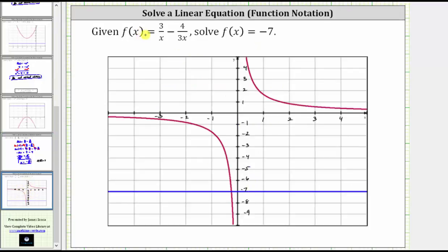In red, we have the graph of f(x) = 3/x - 4/(3x). And then in blue, the horizontal line is f(x) = -7. The solution is represented by the point of intersection, which is this point here.